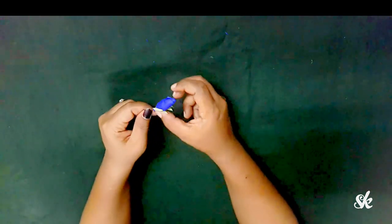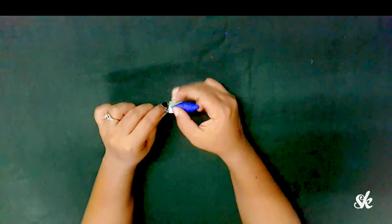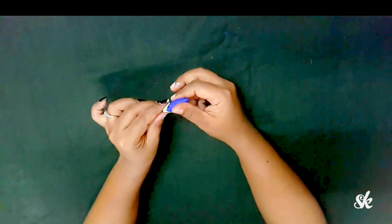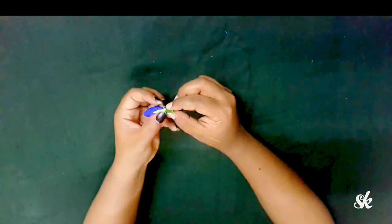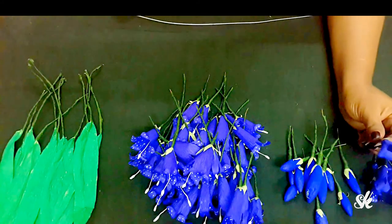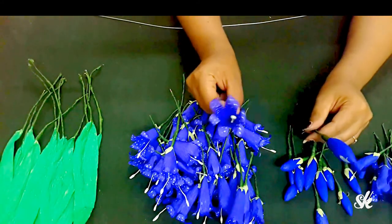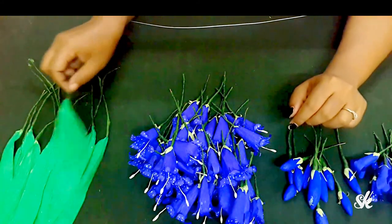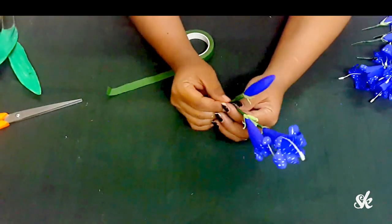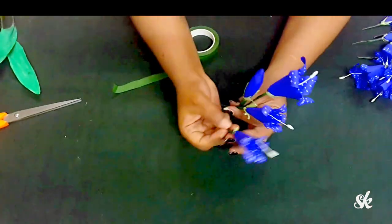Cap the bud and wrap the stem with the green tape. Here I have made a set of buds, blooming flowers, bloom flowers, and green leaves. Now gather all these in several small groups and wrap up with the green tape.